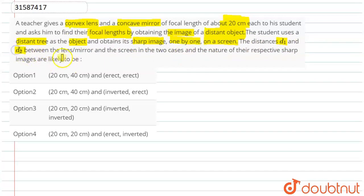The distance d1 and d2 between the lens and screen in two cases and the nature of the respective images are likely to be.